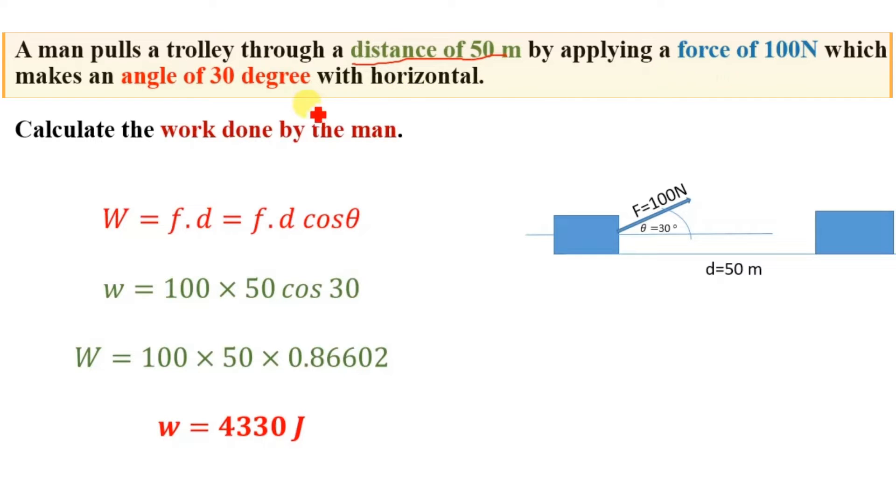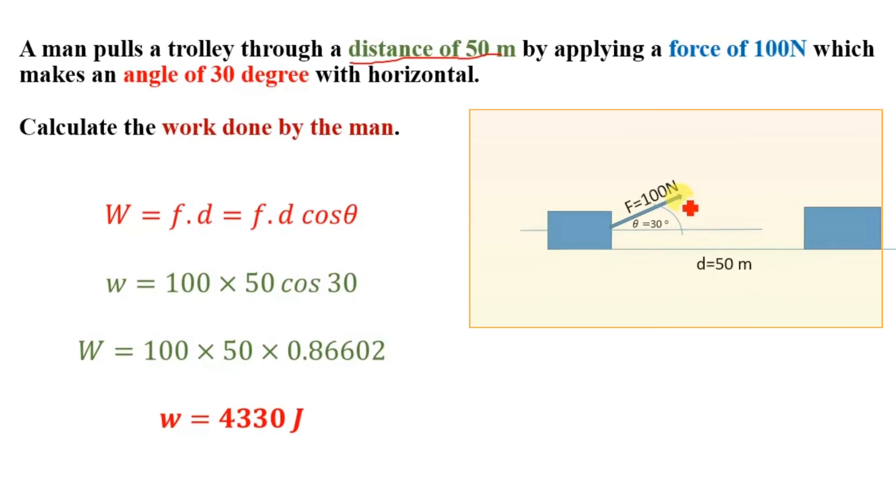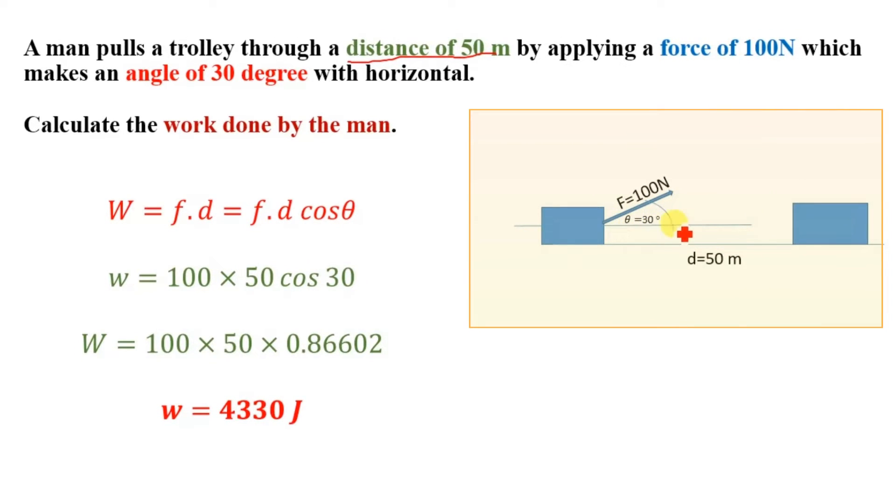Let's suppose here is a man and he is pulling this trolley. The amount of force with which he pulls the trolley is 100 Newton, and this force is making an angle of 30 degrees with the horizontal. The distance it travels is given as 50 meters.